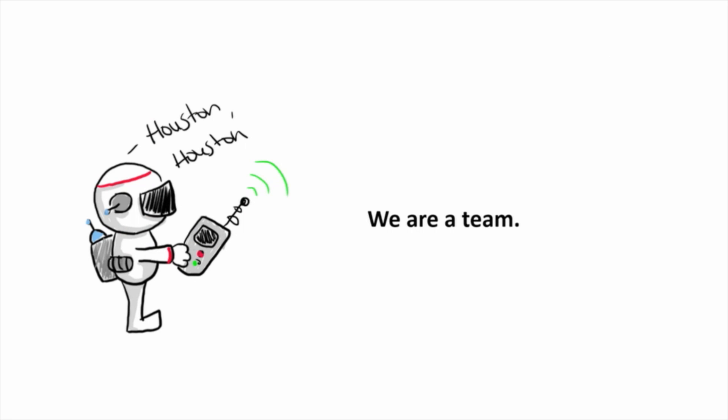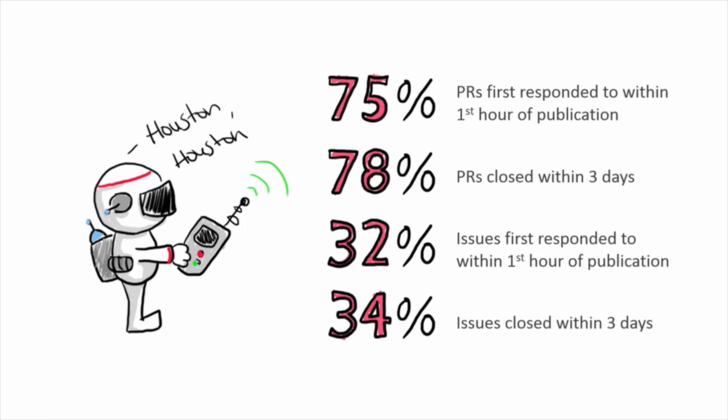The next thing we did well was realize that we're all a team — no matter where you live, where you work, or who you are, we're all working towards a common goal on the same project and we all want to succeed. Which also means you have to be responsive. The Roslyn team before we moved fully open source — the community was actually telling us we weren't being responsive enough in the open, probably because we were doing a lot of work internally. When we actually moved to fully open source, we measured responsiveness using the Octokit API and learned that we now respond to 75% of pull requests within the first hour of them being published, and we close almost 80% of pull requests within the first three days.